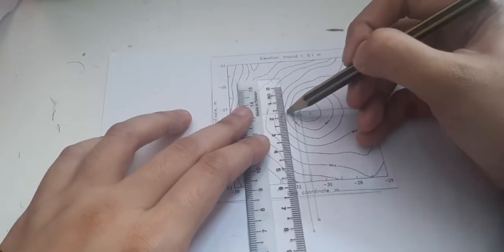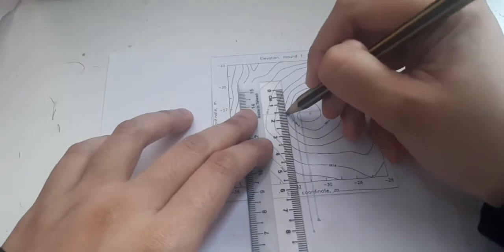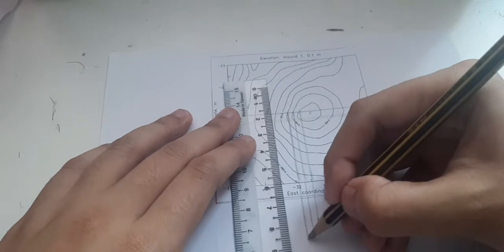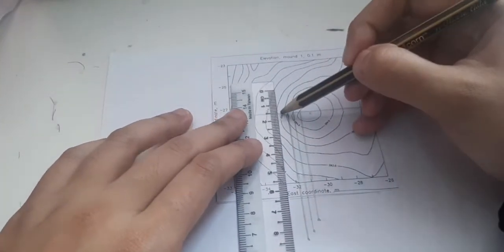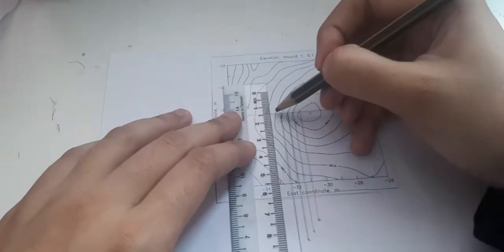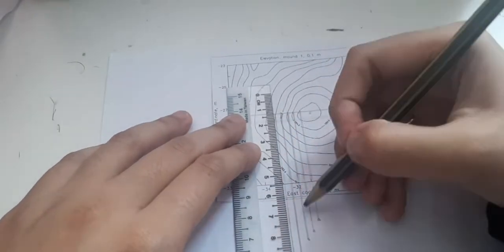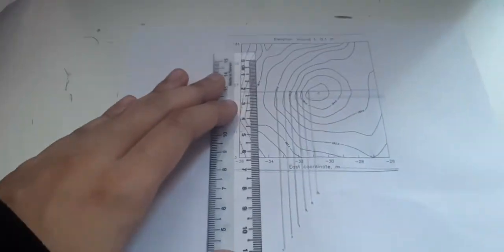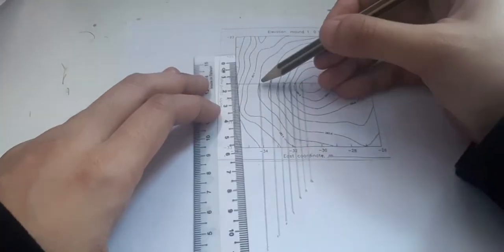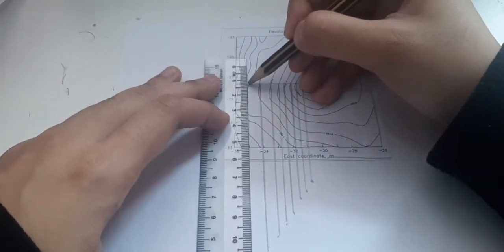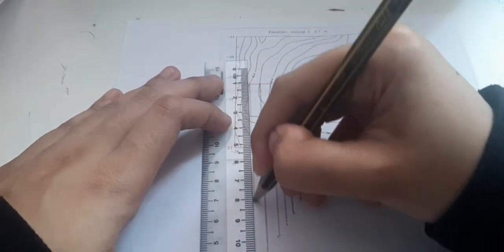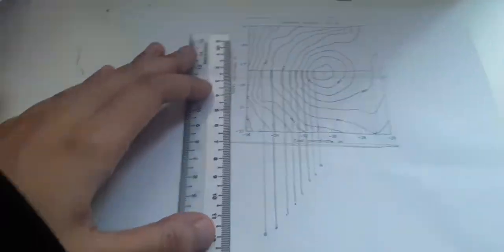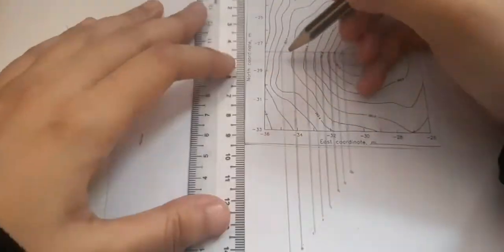Then continue the next line on the left. So basically, I will finish up the left first. So it will be lower, more lower. Next, lower. So I just follow the line where the contour lines intersect with my horizontal line just now. So I will continue until the last one at the side.